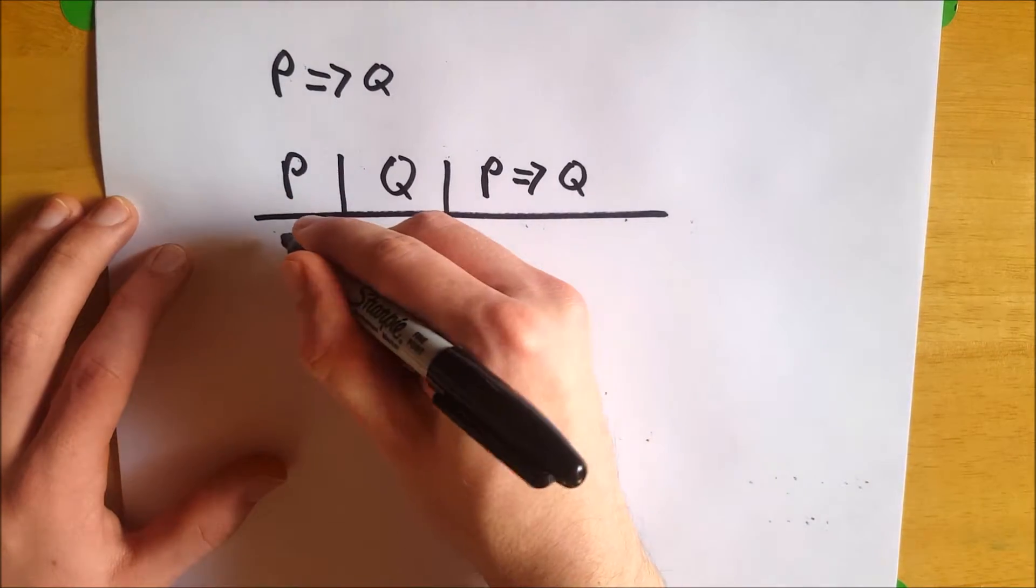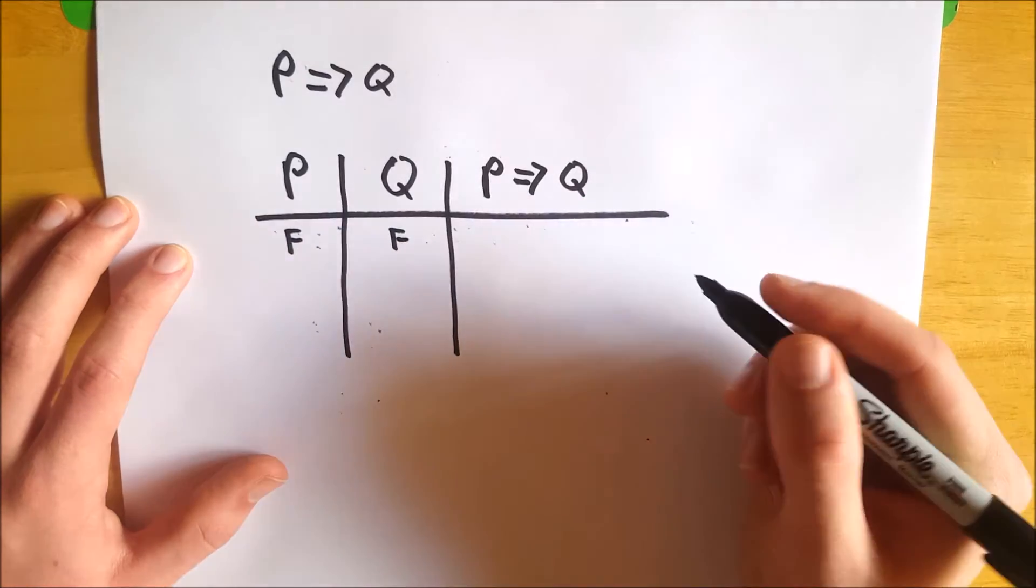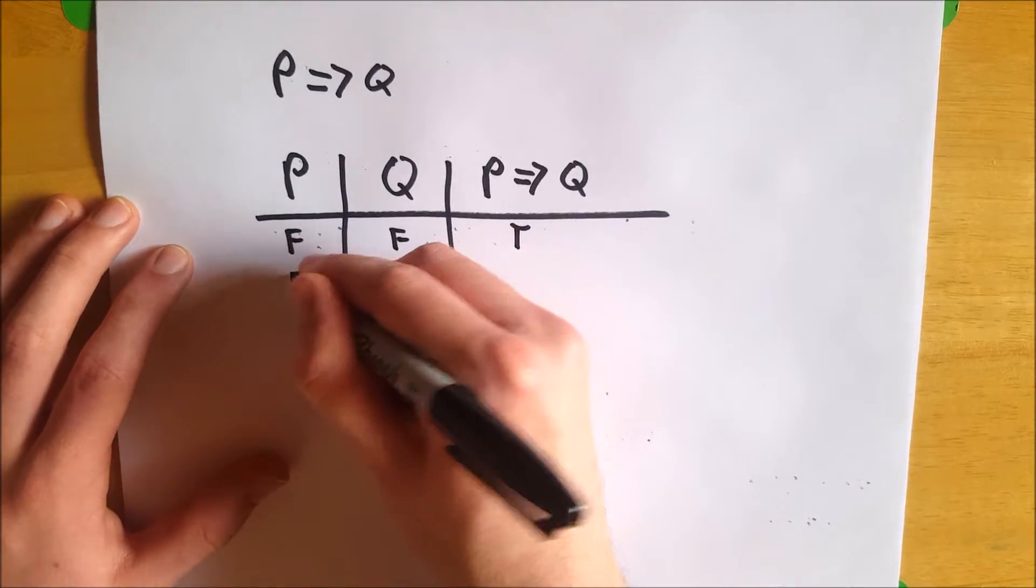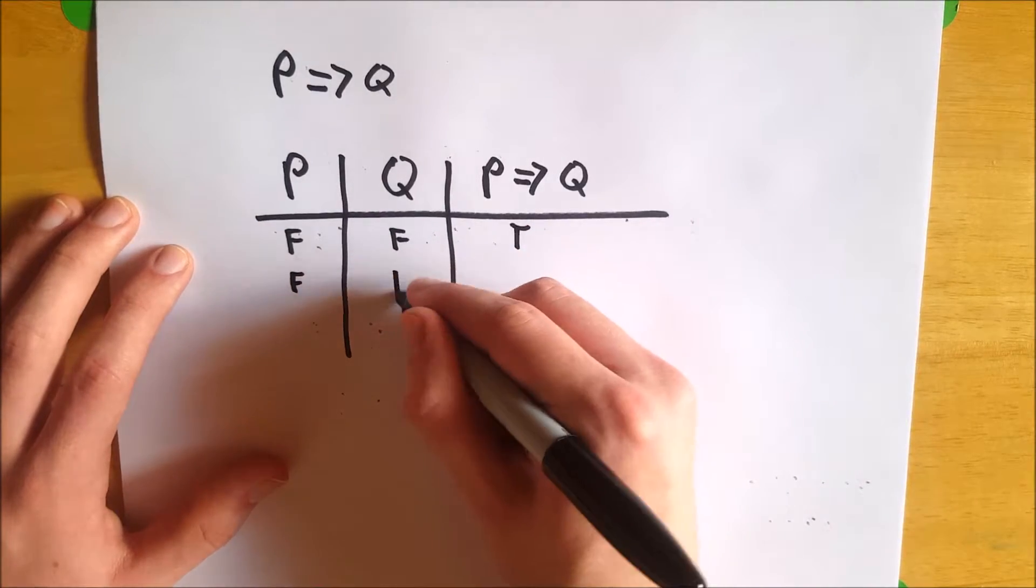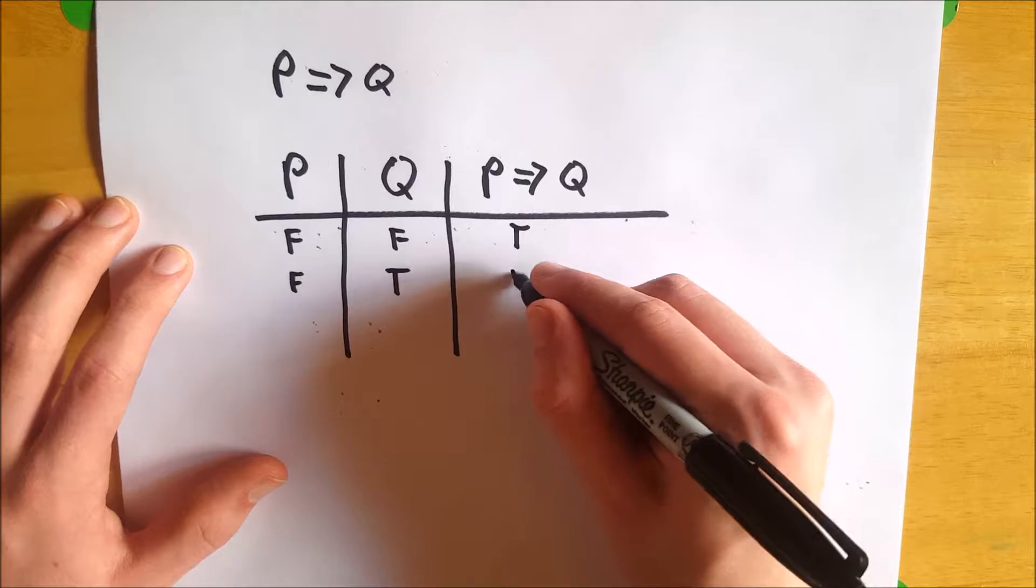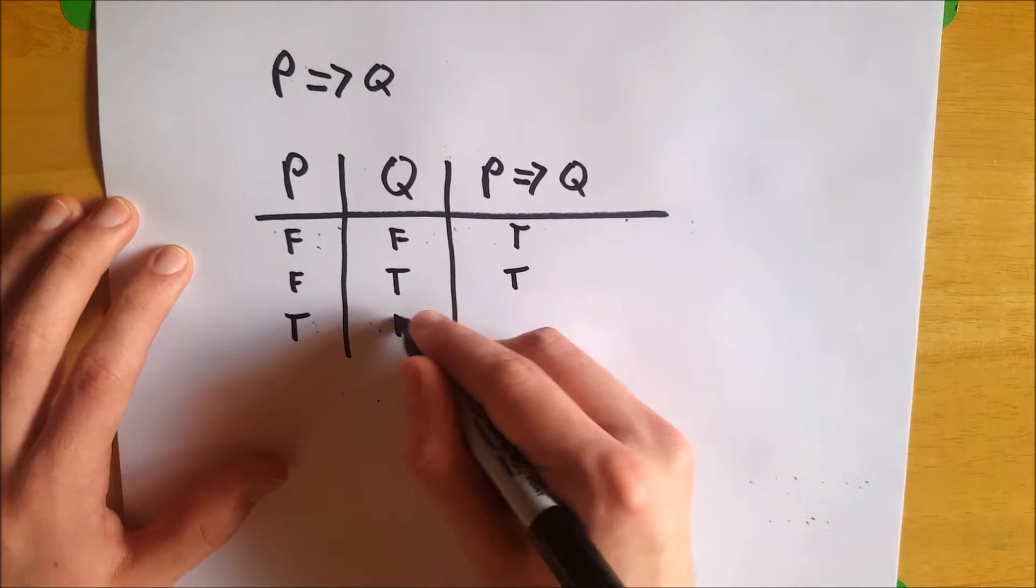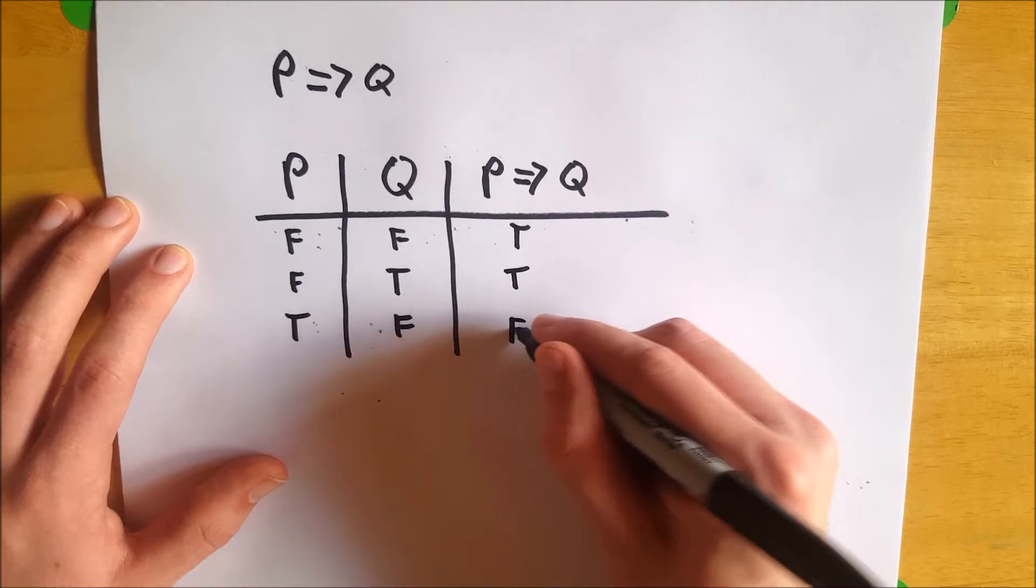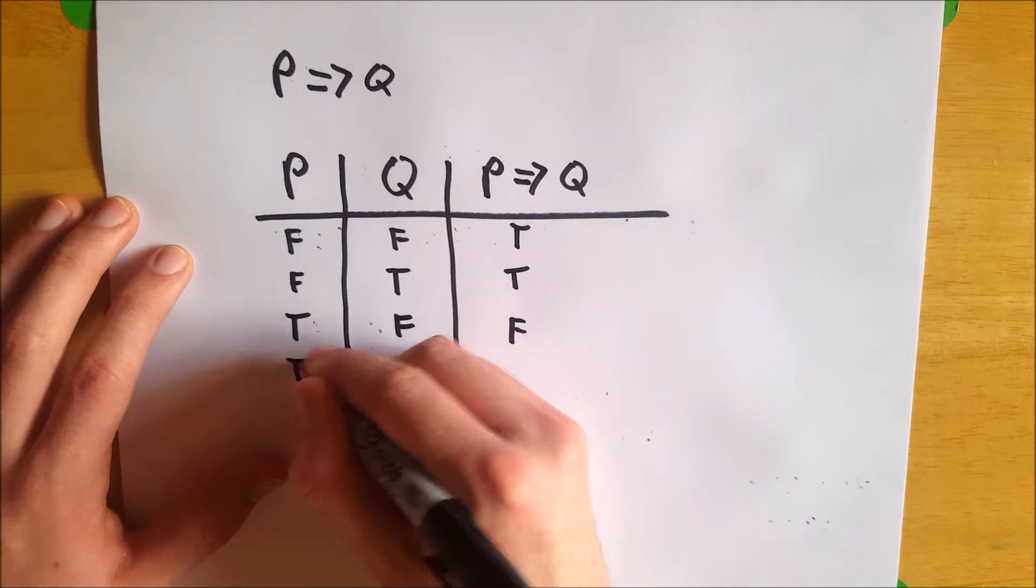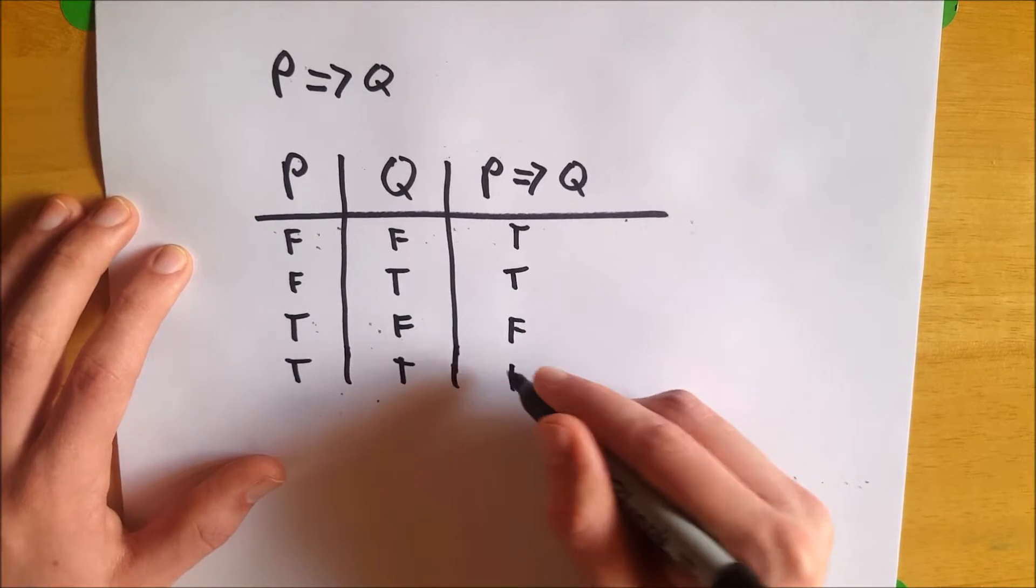When P is false and Q is false, P implies Q is true. When P is false and Q is true, P implies Q is true. When P is true and Q is false, P implies Q is false. And when P is true and Q is true, P implies Q is true.